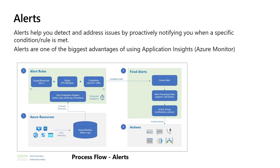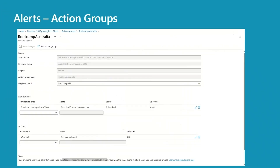There are three parts to alerts: alert rules, action groups, and action processing rules. Action groups store your preferences for notifications and are really important — based on the notification type, you need an email address or phone number ready. If you're using actions for automation, you need your webhook, Azure function, or Logic App URL ready. Let's start with action groups — you need to provide basic information like subscription, resource group, region, action group name, and a display name.